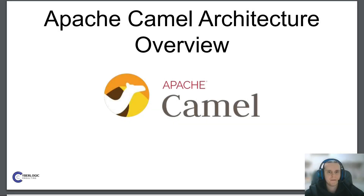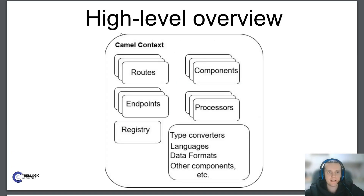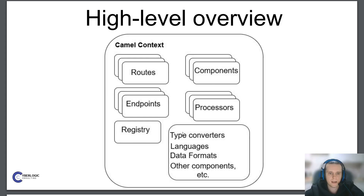Hello fellow Java developers, welcome to the starter course on Apache Camel. In today's video we will take a look at Apache Camel's architecture. At this diagram we can see all major Camel architecture components. The main component is CamelContext, which holds all Camel-related entities: routes, components, endpoints, processors, registry, and many others.